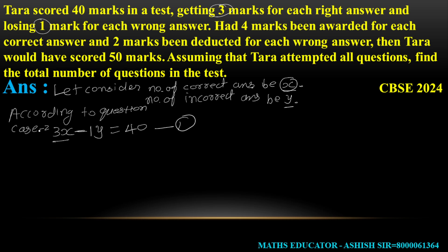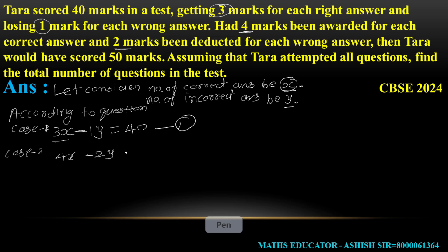Case 2 के लिए: Correct Answer का marks 4 है, तो 4X। और 2 marks deducted for each wrong answer, तो 2×Y। Correct Answer के marks 4X हैं और Incorrect Answer के marks 2Y हैं। तो 4X - 2Y = 50। यह Equation 2 बन गया।